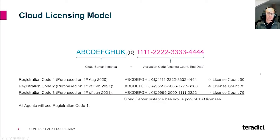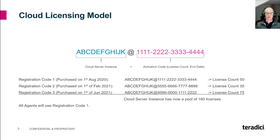The registration code you will receive is going to look a little bit like this. The section before the at-symbol represents your cloud license server instance containing a pool of licenses. The section after the at-symbol represents your actual activation code and contains the license count and the expiration date of your licenses.